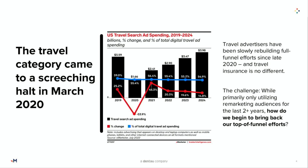Unfortunately, the first thing that happened when the world changed was we had to get more efficient and pull back on ad spending. The first spot that typically gets pulled is upper funnel — our awareness media, our non-converting, non-directly attributable media dollars. So what we're going to talk about today are ways to rebuild that funnel and rebuild our audience strategy, and bring data back to our clients to say: maybe next time, pulling back on awareness media is not going to be the right first choice.